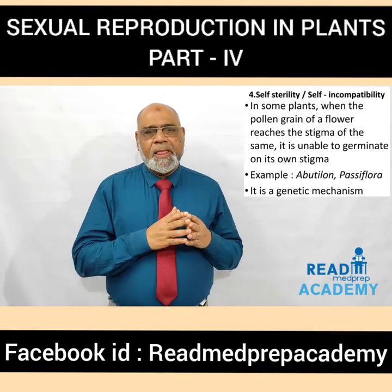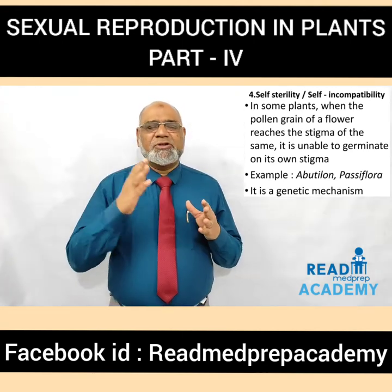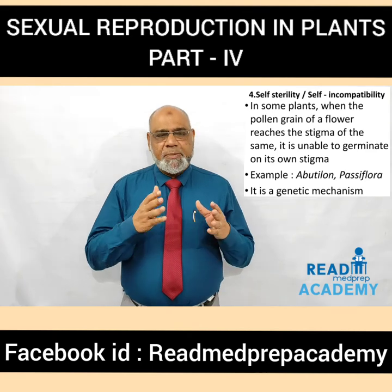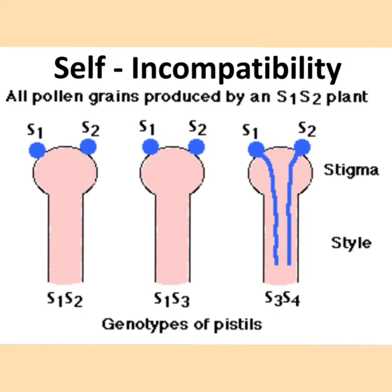In some plants, when the pollen grain of a flower reaches the stigma of the same flower it is unable to germinate on its own stigma. Example: Abutilon, Passiflora. It is a genetic mechanism. In this image you can see that the pollen grains produced by an S1 and S2 plant — when these pollen grains fall on the stigma of the same S1/S2 plant they will not germinate. If the same S1 and S2 pollen falls on an S1/S3 plant it will also not germinate and will be rejected. When the S1/S2 pollen grain falls on the S3/S4 stigma, it germinates.